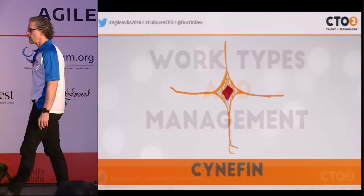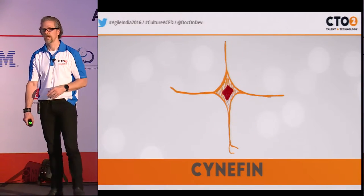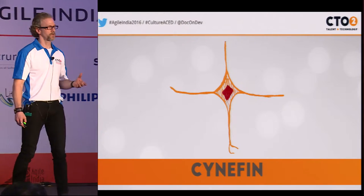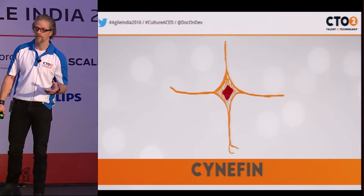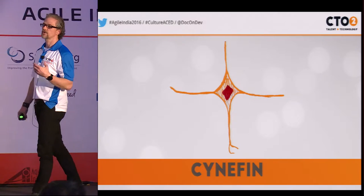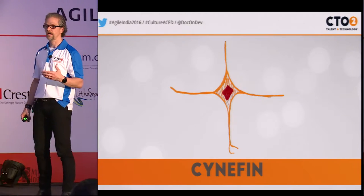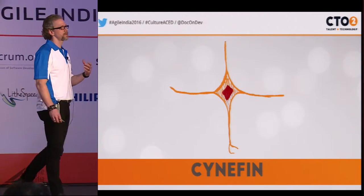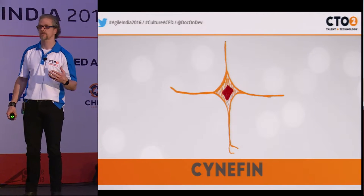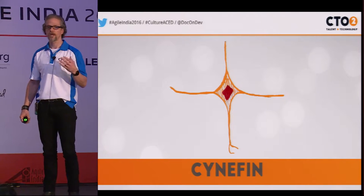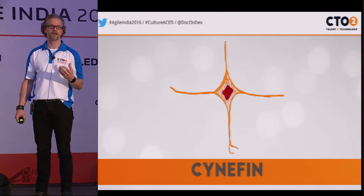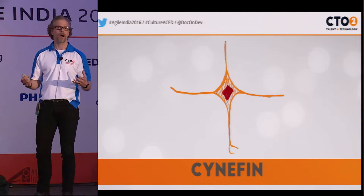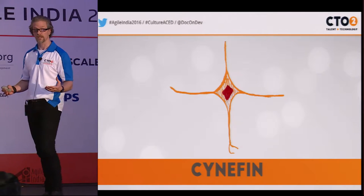First of all, this is not a quadrant. It looks similar to a quadrant, but actually there are five domains or five contexts. Cynefin is basically a sensing framework — a way for us to look at our surrounding environment and understand where we are in terms of complexity.